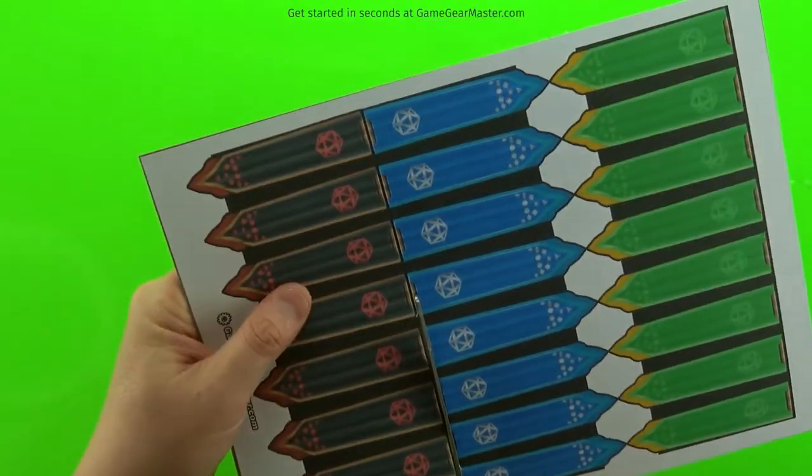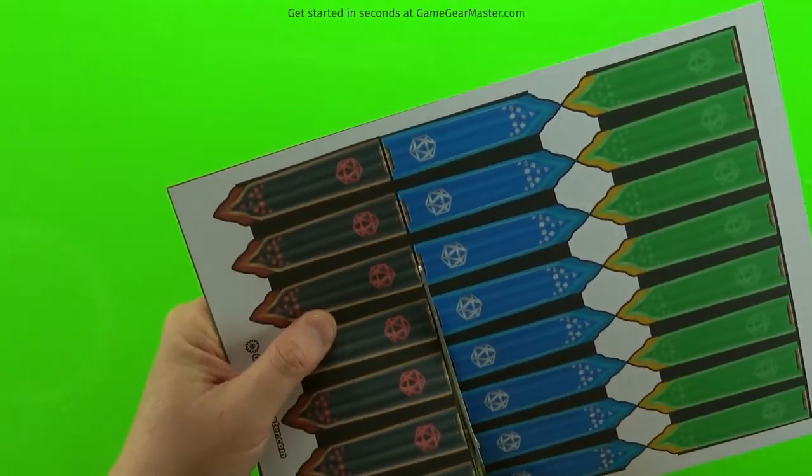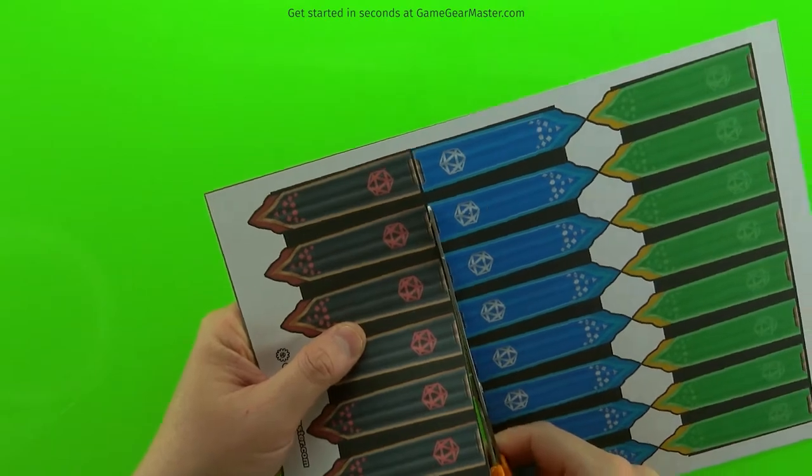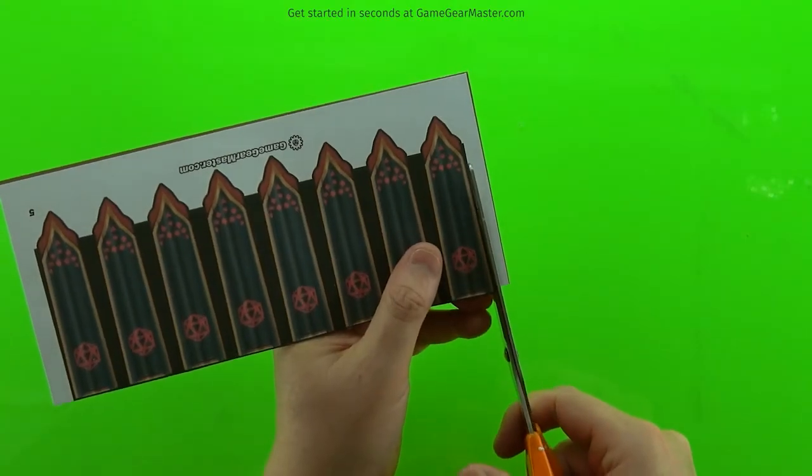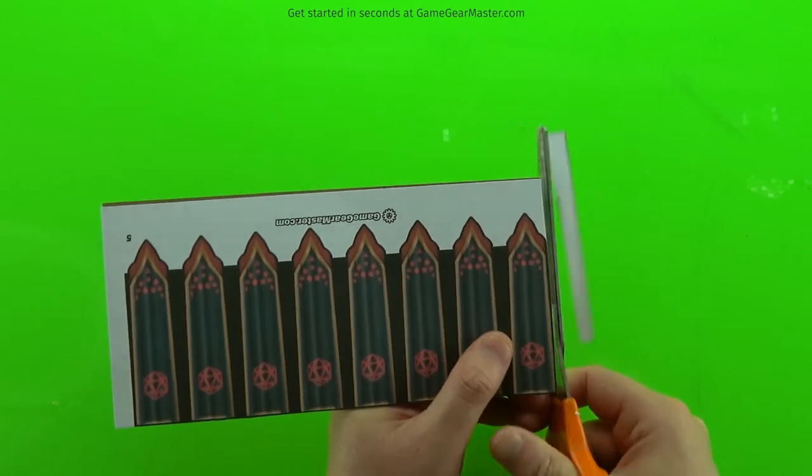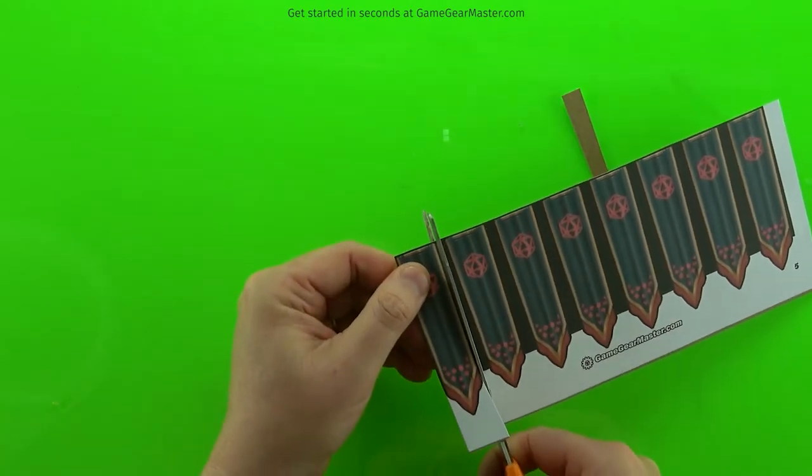Then just cut out the flags. Now you'll notice there's a thick black border around these flags. This is to ensure that if you cut them a little off you won't have white edges. It'll kind of look icky. So yeah, so you should have a lot of room for error there.